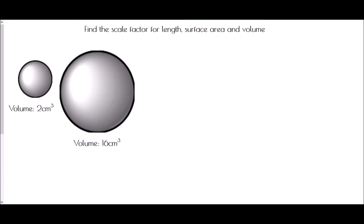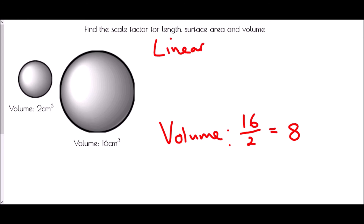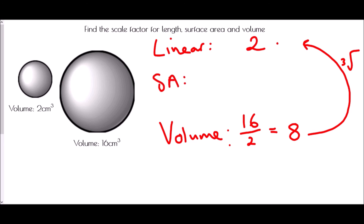In the next one we have 2 spheres. The volume of the first one is 2 cm³ and the volume of the second is 16 cm³. So the volume scale factor is 16 over 2, which is 8. I want to go back to the linear scale factor — to turn linear into volume I would cube, so to go backwards I cube root. The cube root of 8 is 2, so the linear scale factor is 2. Therefore the surface area scale factor is 2 squared, which gives us 4.